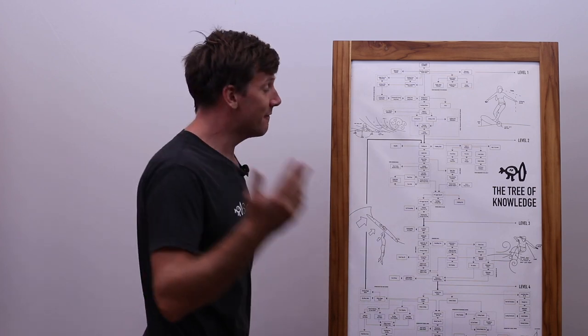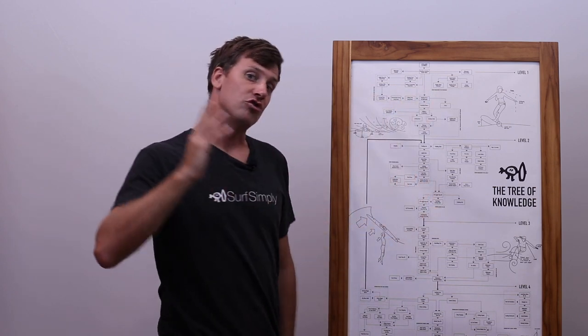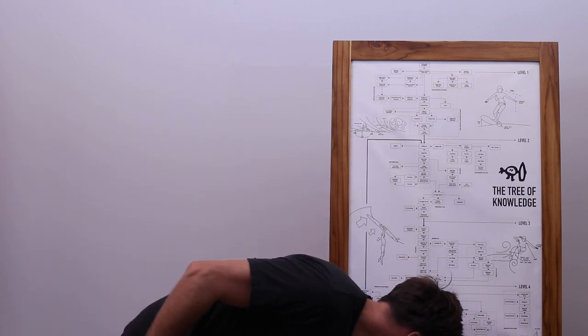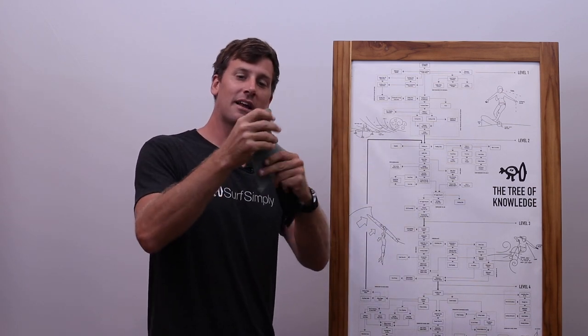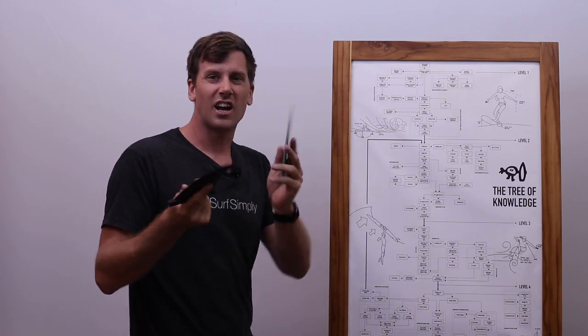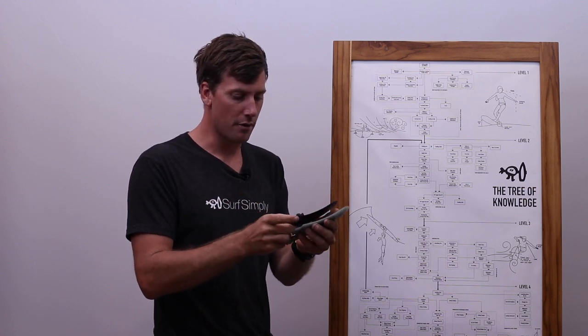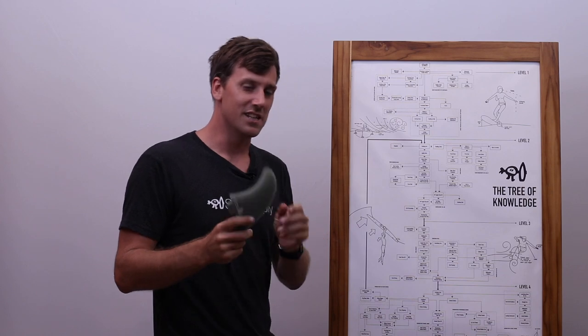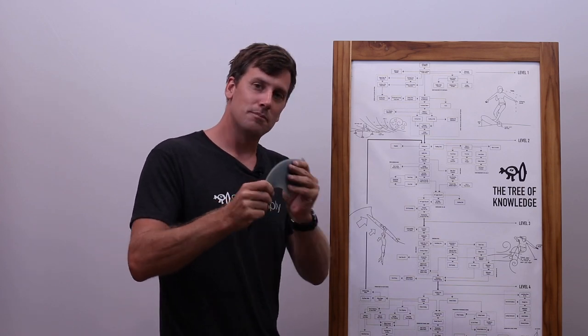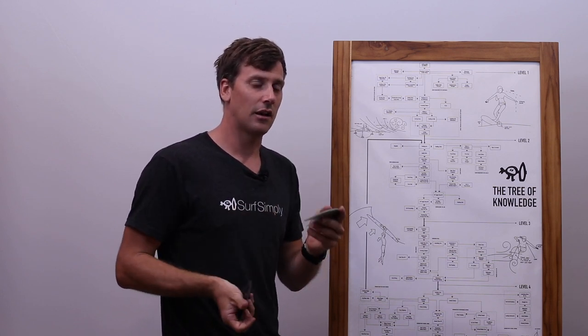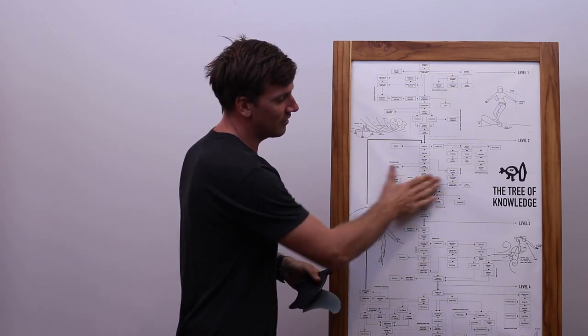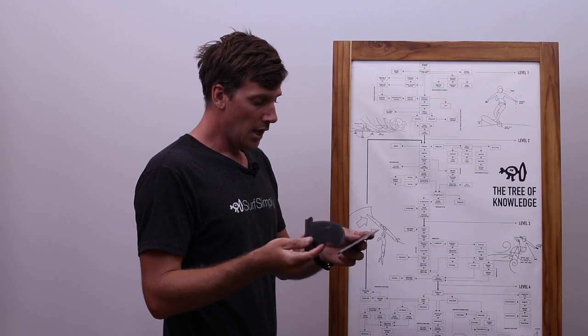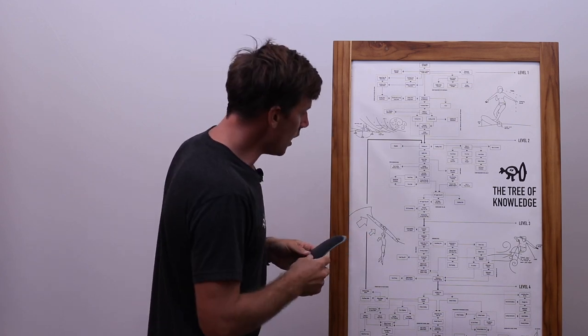For those who don't know about our level system: level two is where we're first paddling out and catching unbroken waves, mostly surfing straight towards the beach, then starting to think about angling our takeoffs and trimming across the wave. With reference to that, my first piece of advice is if we're looking at level one and level two, just don't worry about the fins too much. As long as there is a fin in the board, it will do its job absolutely fine.